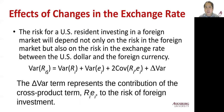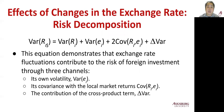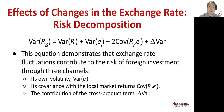Mathematically this is a bit complicated, so you won't be asked to solve it, but you need to know that the equation demonstrates that exchange rate fluctuation contributes to the risk of foreign investment through three channels: first, its own volatility; second, the covariance with the local market returns; and third, the contribution of the cross product terms. Essentially, exchange rate fluctuation itself changes the variance of the return for the US resident.